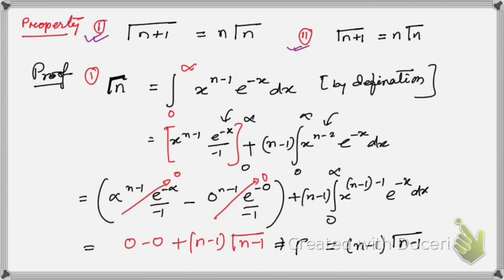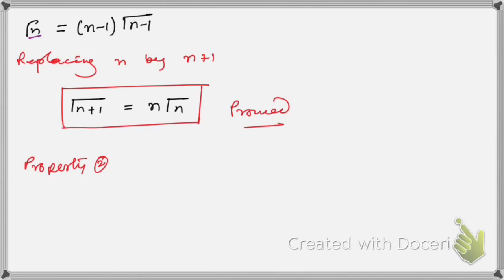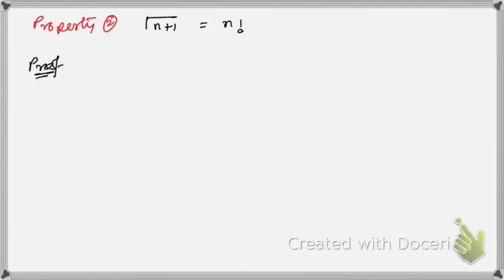Now let me show how to prove the second property. Property number two states that Γ(n+1) = n! (n factorial). We are going to take the help of the first property to prove this one.